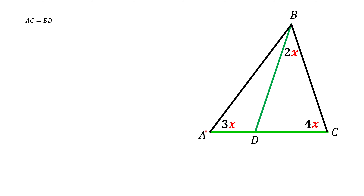Here we have a triangle ABC. We know two angles of that triangle: angle A is 3x and angle C is 4x. There is also a segment BD, and we know an angle 2x here — angle DBC. We also know that AC equals BD, and we are asked to find angle x.